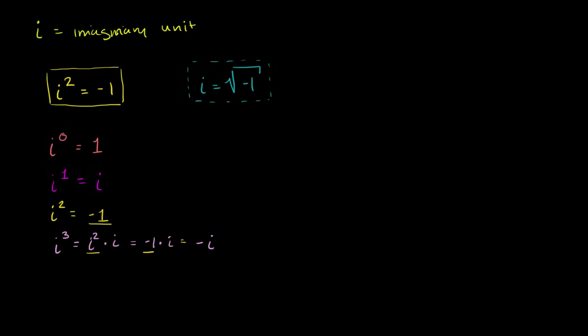Now what happens if we take i to the fourth power? I'll do it up here. i to the fourth power. Well, once again, this is going to be i times i to the third power. So that's i times i to the third power. But what was i to the third power? i to the third power was negative i. This over here is negative i. And so i times i would give you negative 1. But you have a negative out here. So it's i times i is negative 1. And then you have a negative. That gives you positive 1. Let me write it down.